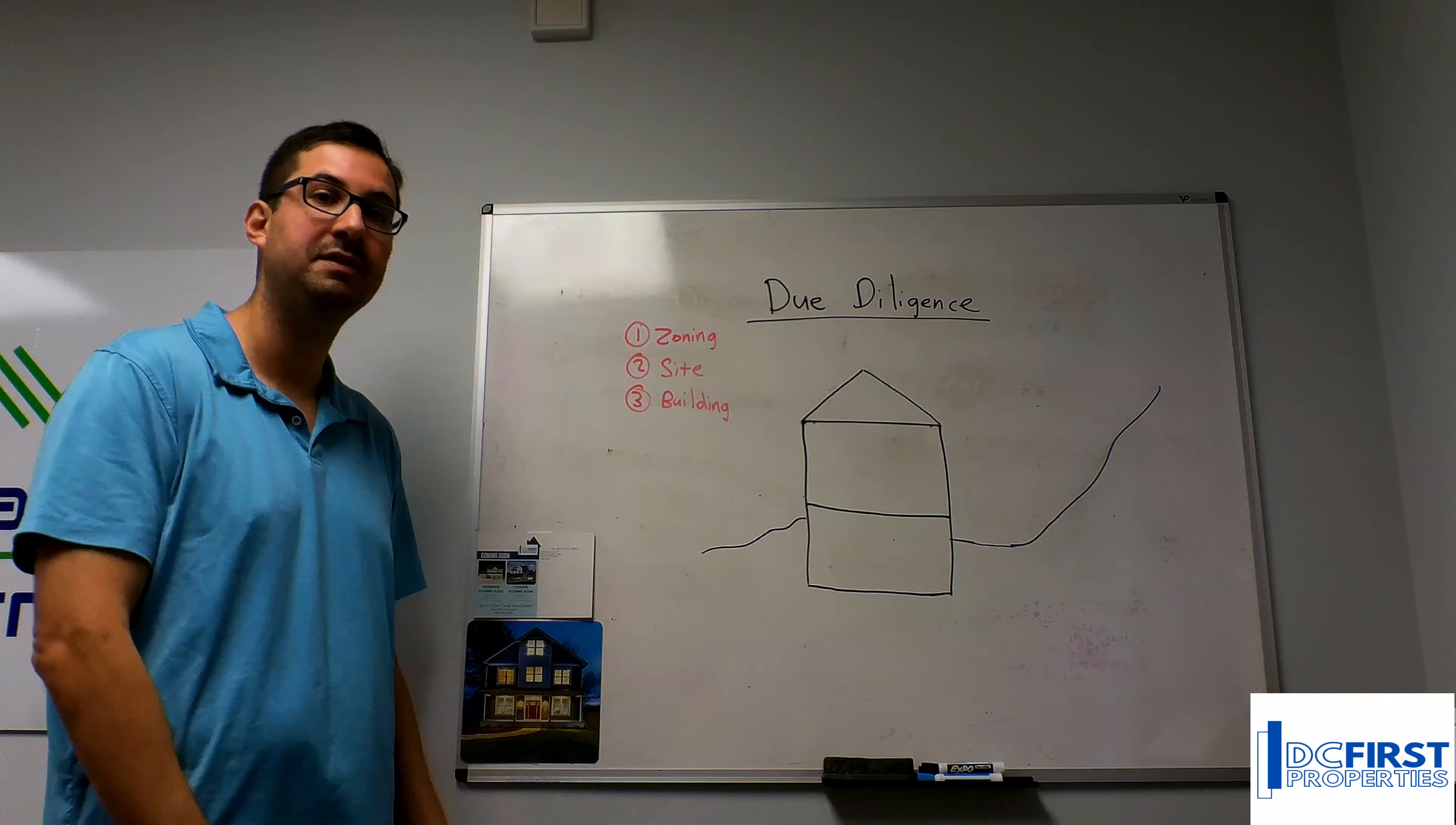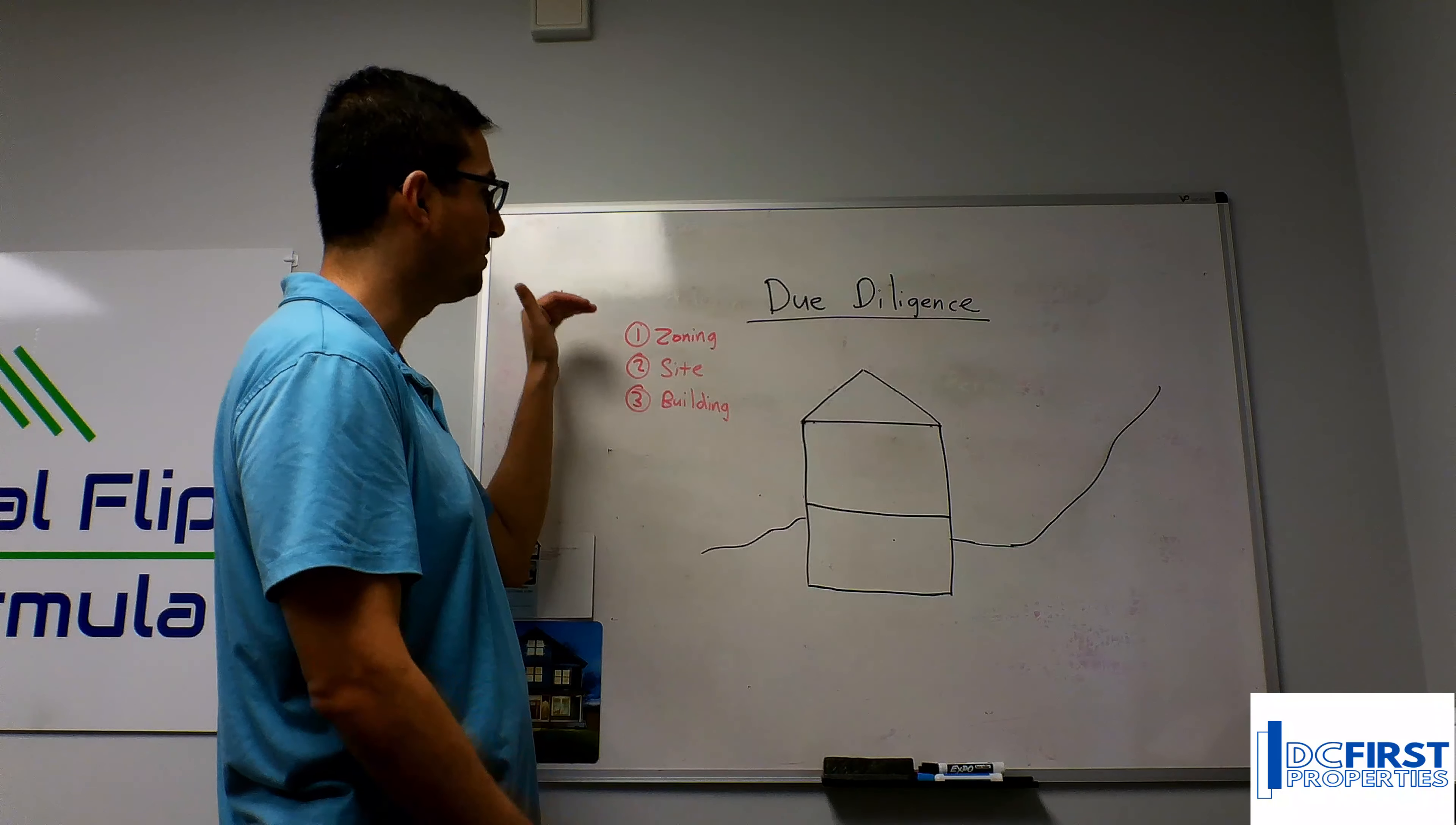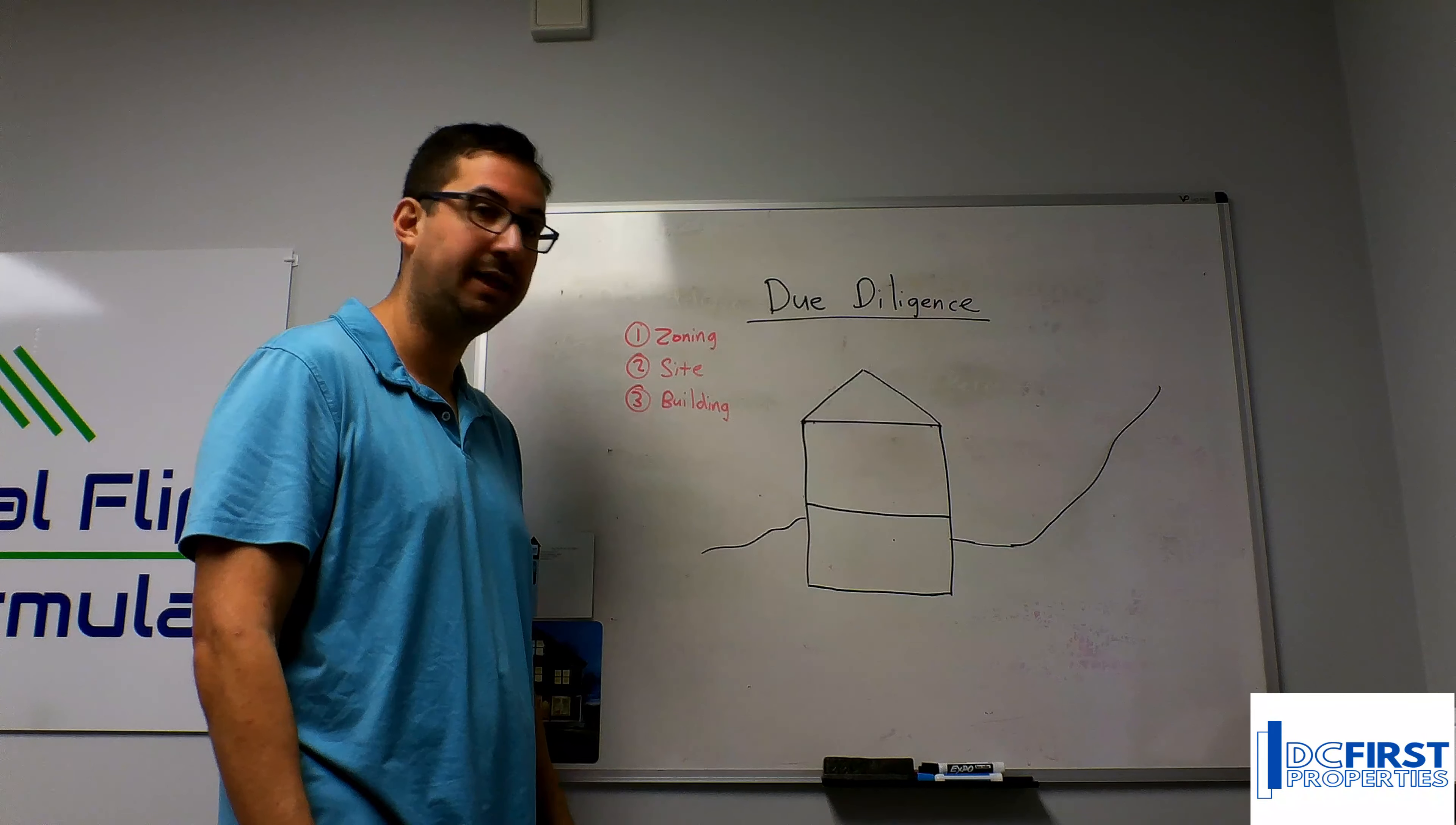For zoning, the key piece is determining what can be done with the existing project and does the project even comply with existing zoning ordinances. For example, zoning is going to define what is the height of the structure supposed to be, what parts of that structure are currently grandfathered in from older zoning codes that don't exist today.